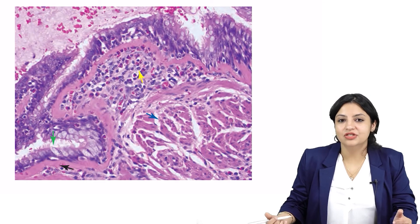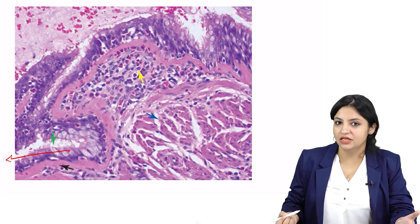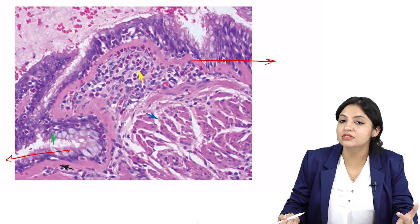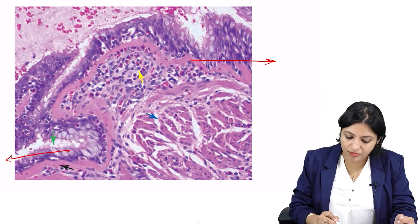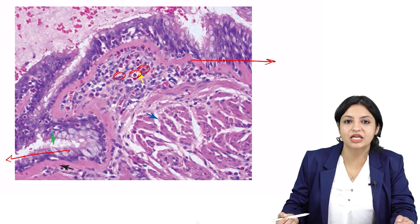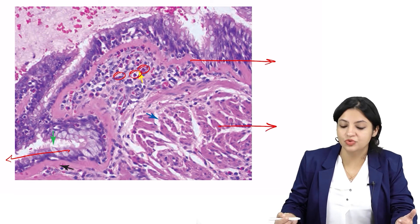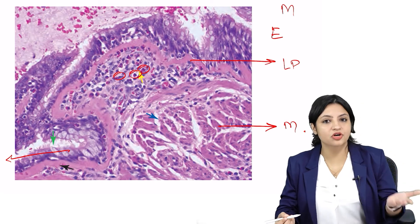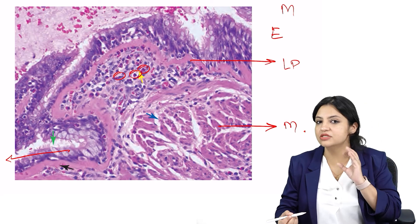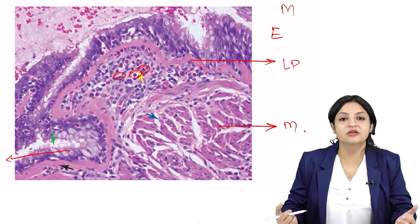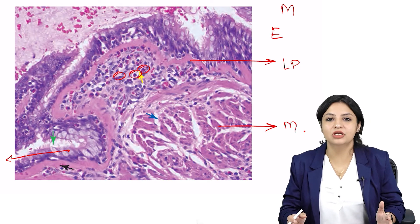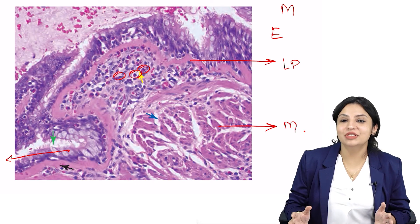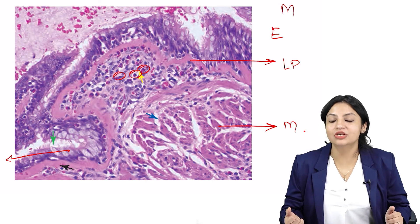Looking at this pathological section: goblet cells are increased, and the basement membrane is so thickened — there is definitely something going on. Look at the lamina propria — can you see the red-colored cells? Those are eosinophils infiltrating the lamina propria. And look at the muscle in the mucosa — muscularis is so much thickened. That is a very characteristic image of airway remodeling, taken from Robbins Textbook of Pathology, the gold standard of pathology. This is airway remodeling occurring in asthma.